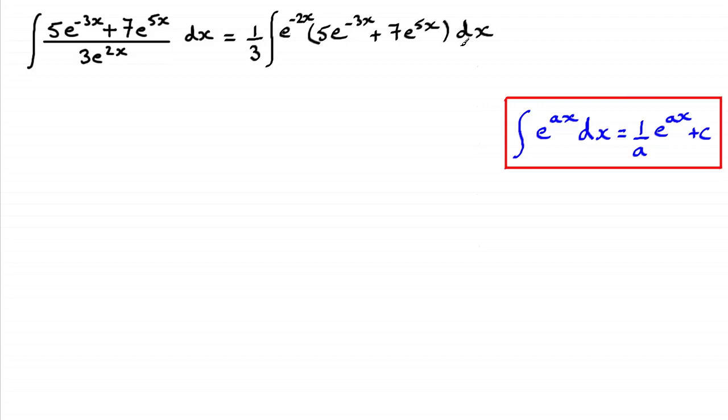Now all I need to do is expand out the bracket. And if we expand out that bracket, then we're going to get 5e to the power minus 5x just by adding those powers there on the e. And then we've got 7e to 3x just by doing minus 2x added to the 5x.